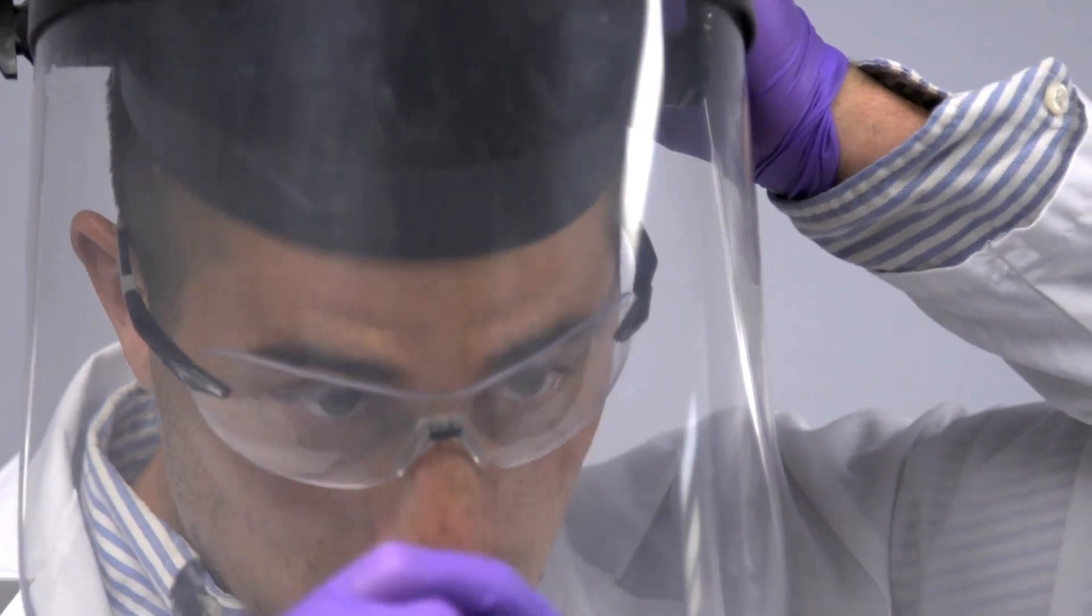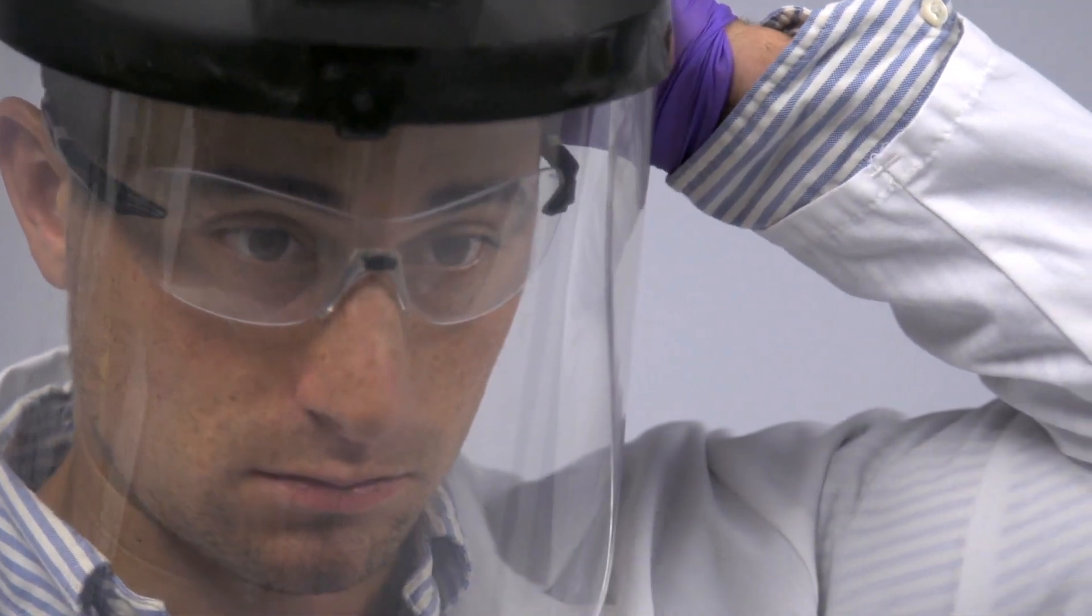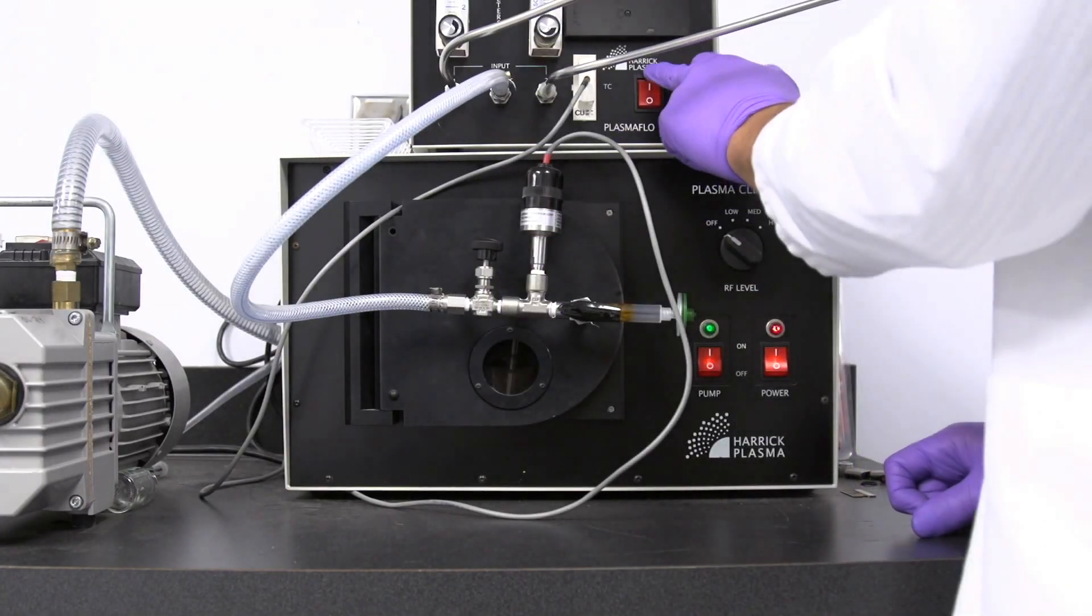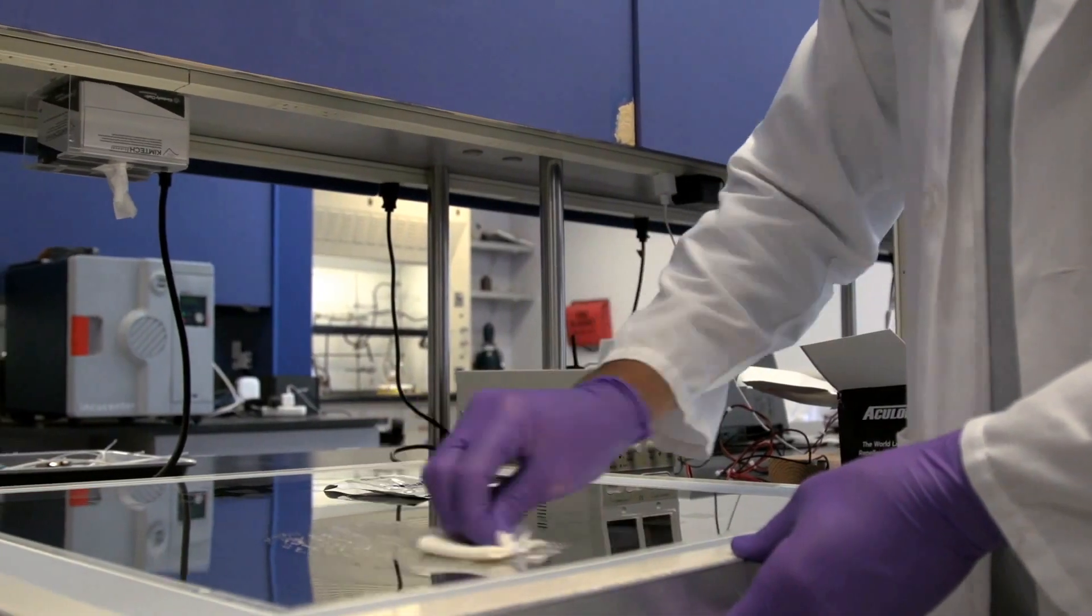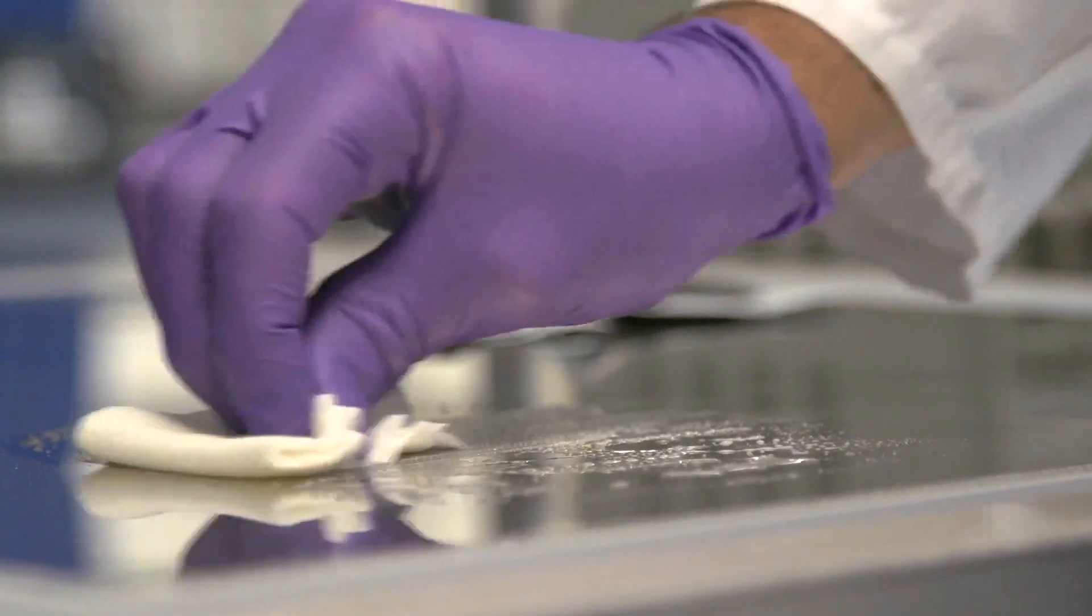Aculon has numerous surface preparation methods at its disposal, ranging from chemical cleaners and activators to physical methods. Generally, surfaces are prepared for modification in a simple manner where complex and expensive equipment is not required.